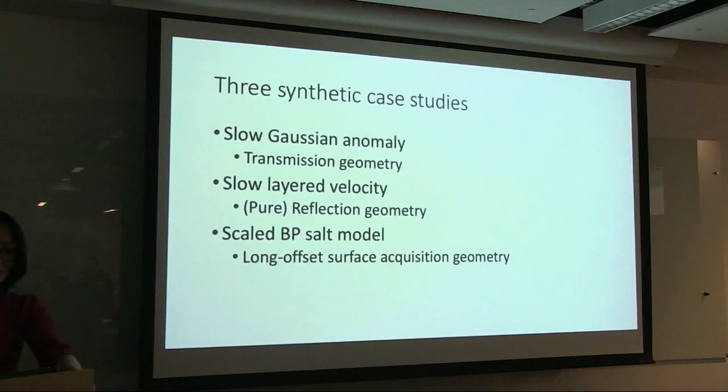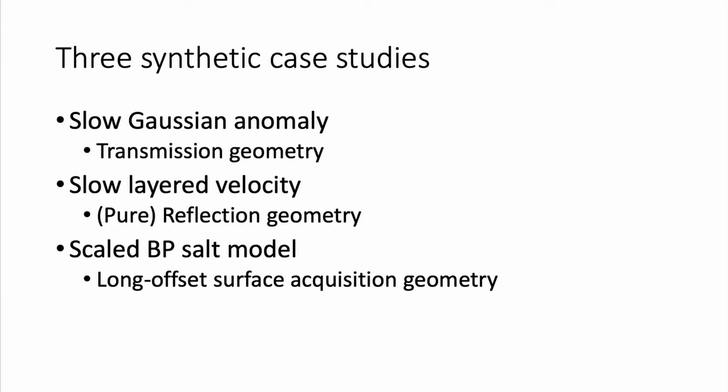I will show three case studies: first, a slow Gaussian velocity anomaly tested in transmission geometry; second, a slow layered velocity in a pure reflection geometry where the second layer is slower so there are no refractions or diving waves; and third, a scaled BP salt model. We chose perturbations in the slow direction because it is the more challenging problem — waves tend to travel through the fast layer.